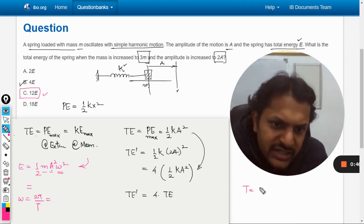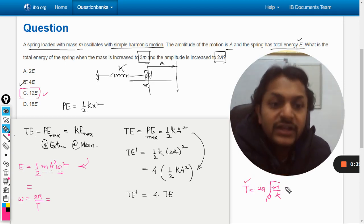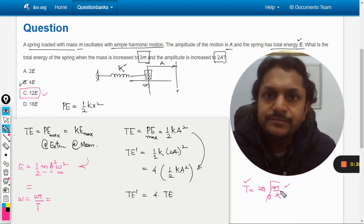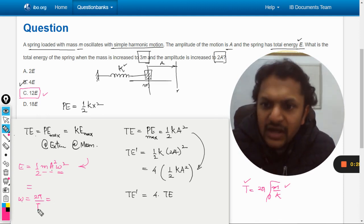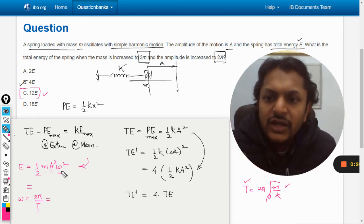T is 2π√(m/k), so you can see here the time period is dependent on mass, and omega depends on time. So it means omega is not constant.